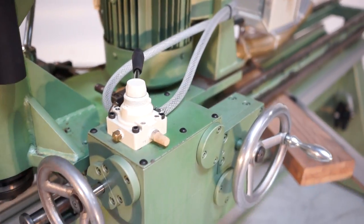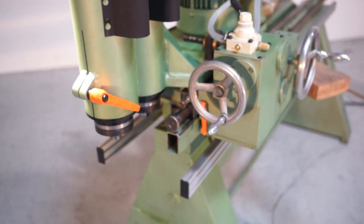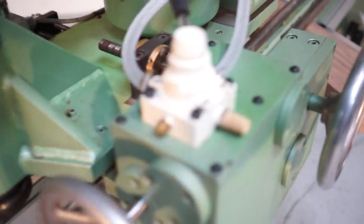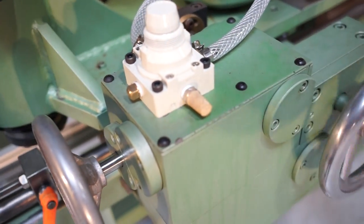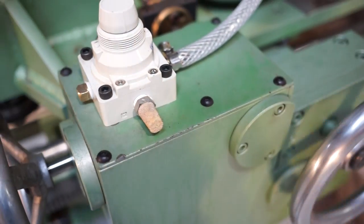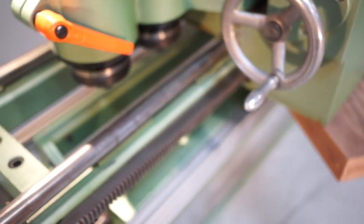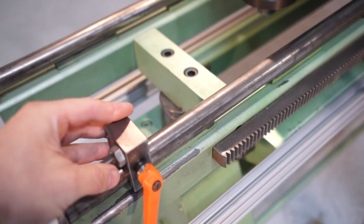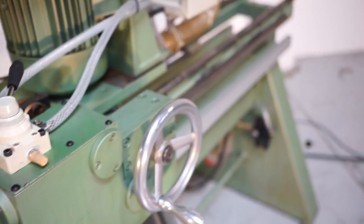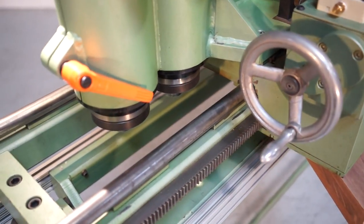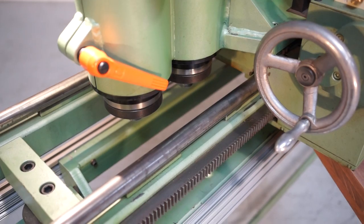We call this an XYZ axis machine. This would be your X-axis right here. You're able to come forward and back and you have these two stops, one front one back, for repeatability. So you can route slots or route your stringers depending on what you're trying to do.